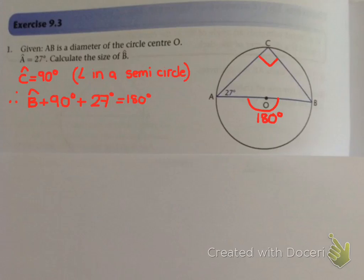So B plus 90 plus 27 must be 180 degrees, and my reason being, sum of angles in a triangle. So finally, I can do some quick work on my equation and get that angle B equals 63 degrees.